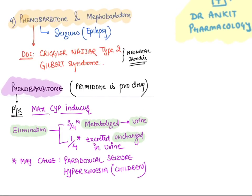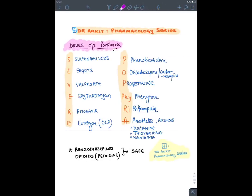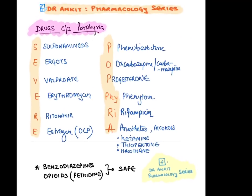Phenobarbitone's prodrug is primidone. It is an enzyme inducer; 75% is metabolized in the liver and excreted in urine, while 25% is excreted unchanged. A notable side effect is that it may cause paradoxical seizures — it can itself trigger seizures — and may cause hyperkinesia (excessive movement) in children.